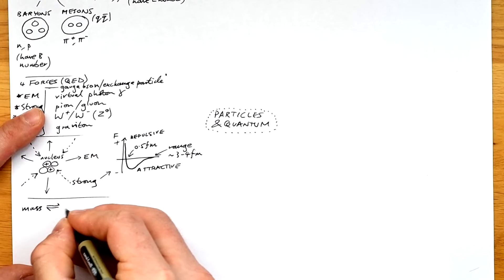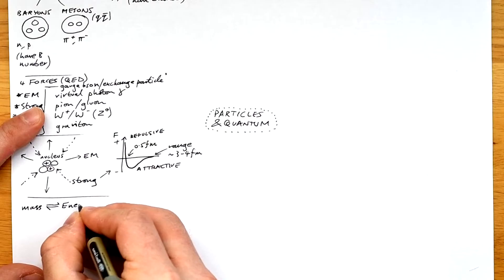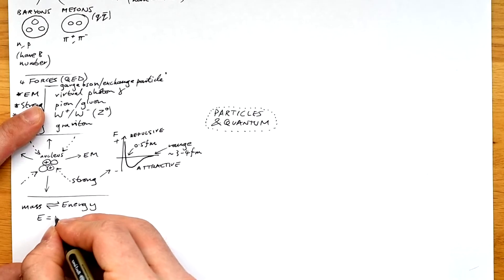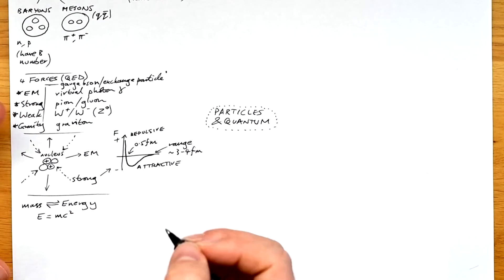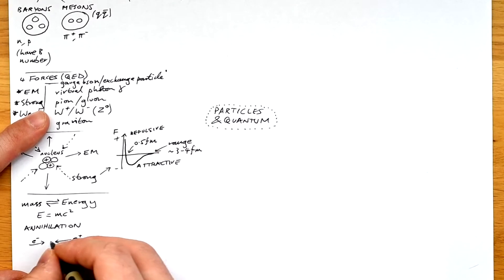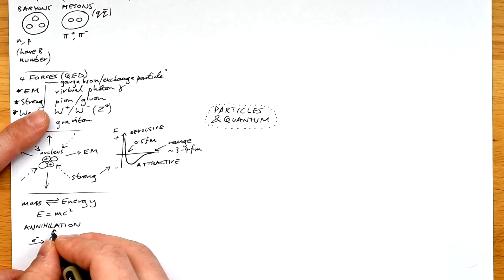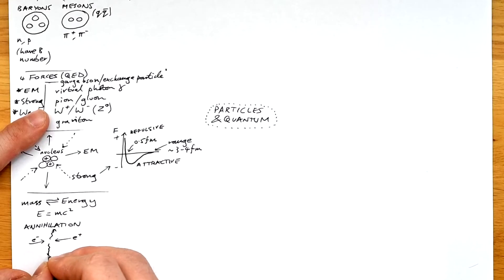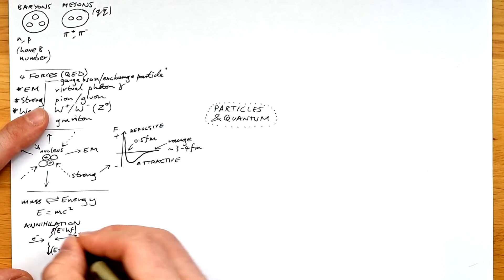Okay, so we know that mass and energy are interchangeable. The equation that links the two is the equation for rest energy of a particle and that's E equals mc squared. Mass is converted into energy in annihilation. That's when a particle and its corresponding antiparticle collide and they're destroyed and the rest energy is converted into photons.